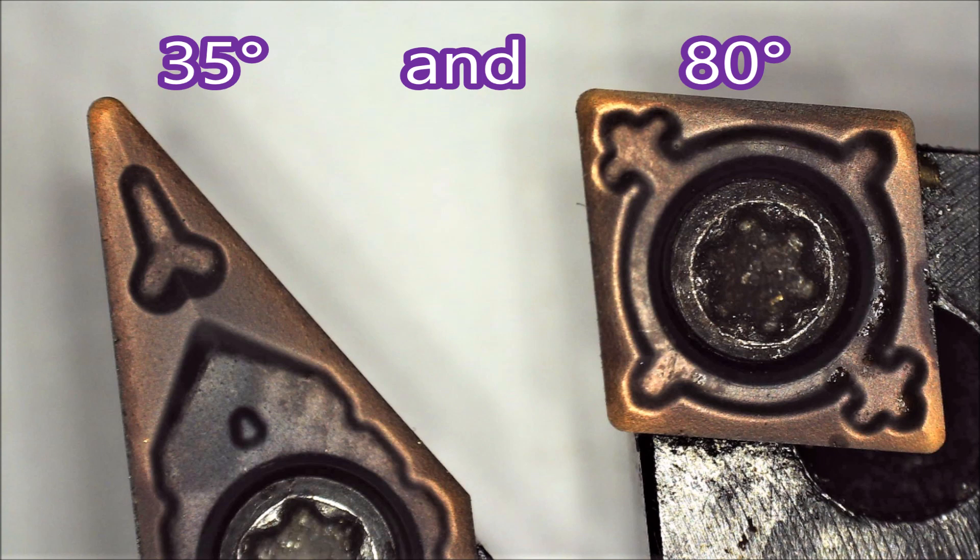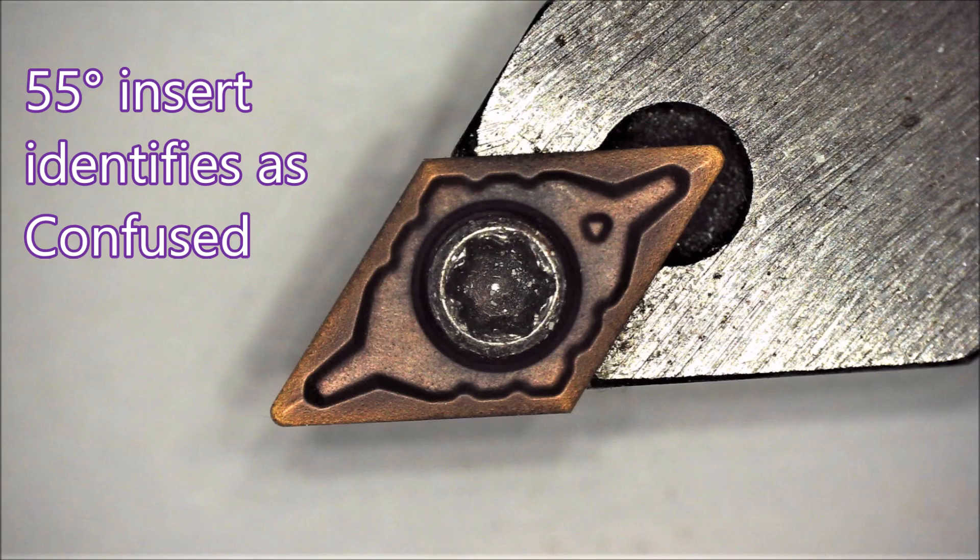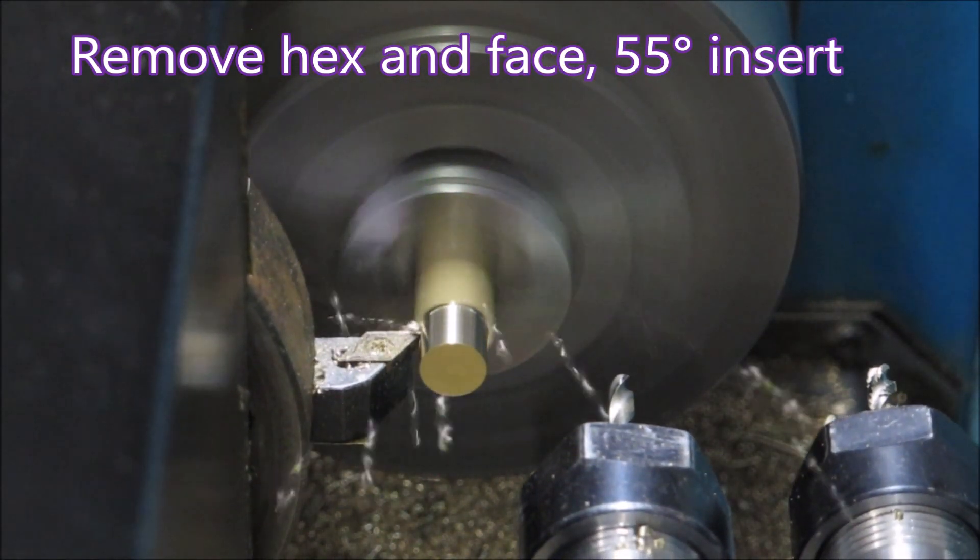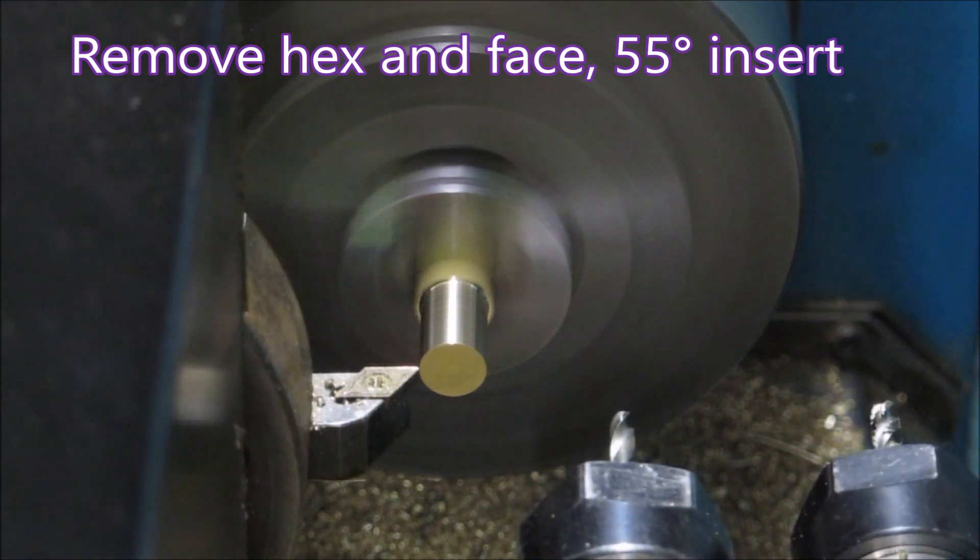Those odd shapes you see just a little back from the cutting edges, they actually stick up. They're chip breakers. And this is a good general-purpose insert that I imagine a lot of people would have. This tool holder and the one for the 80 degree insert actually came with the tool kit that came with my original Hercus lathe when I bought it used.